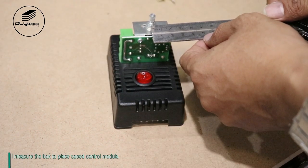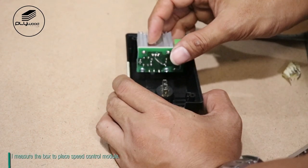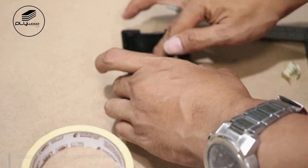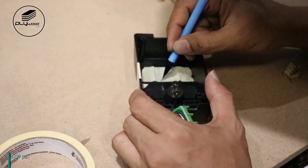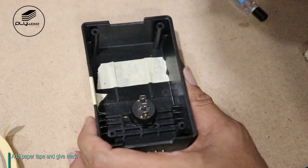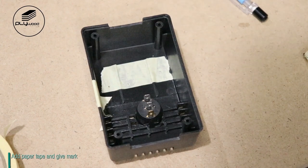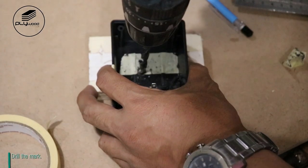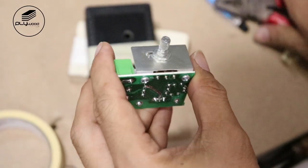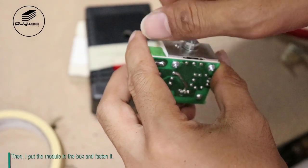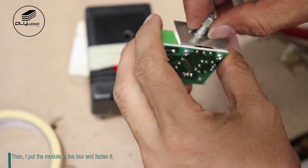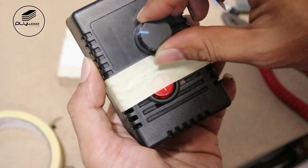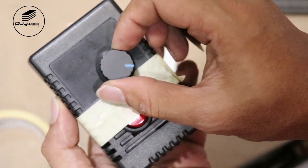I measure the box to place the speed control module. Add paper tape and give a mark. Drill the mark. Then I put the module in the box and fasten it.